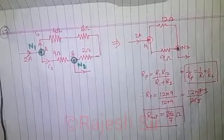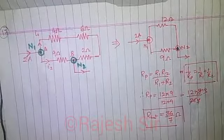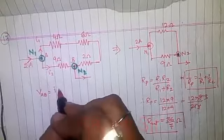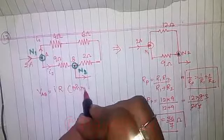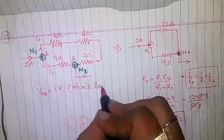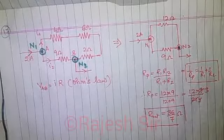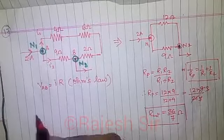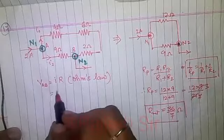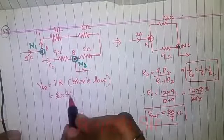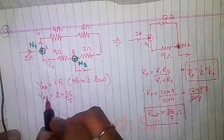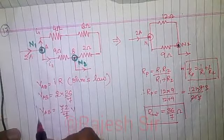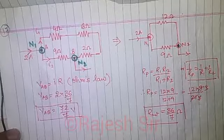The question now also asks us to find out the potential drop across the points a b. Now potential drop across points a b or across the nodes a b will be V equals IR, ohm's law. I always prefer to call this as Salman ohm's law so that you can remember V. So V equals IR. How much current is entering in the circuit? That happens to be 2 ampere. What is the net resistance? That is 36 by 7. And so the potential drop across a b is simply 72 by 7 volt.